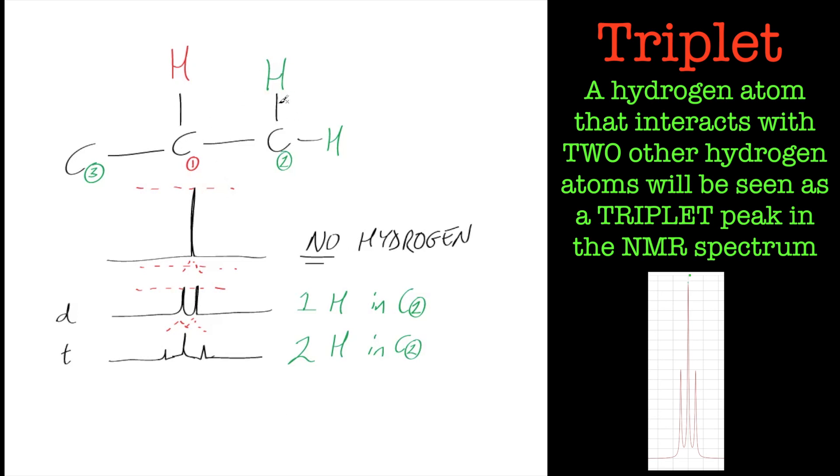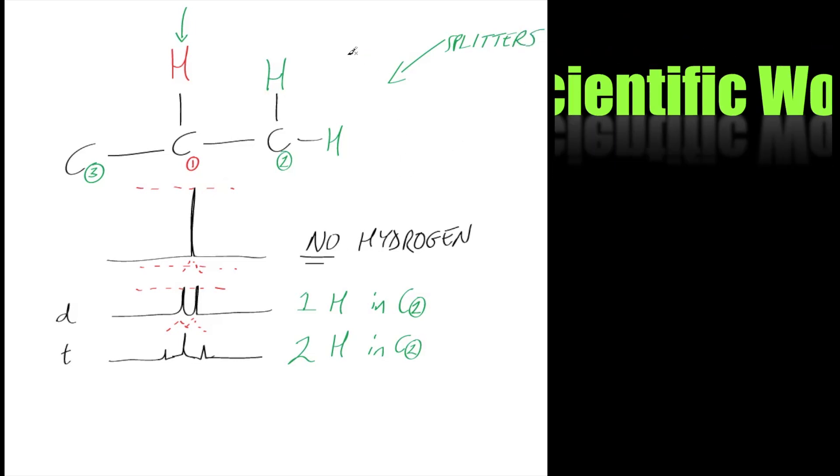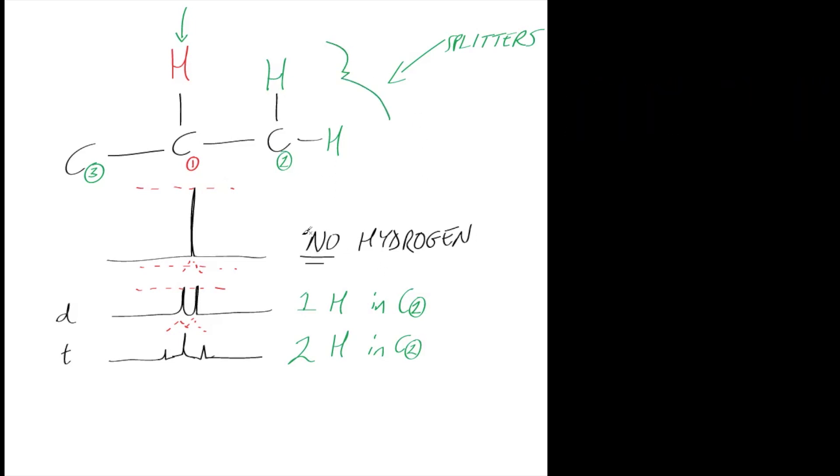And remember, it's the adjacent atoms that are interacting. I'm only interested, this signal here is coming from this hydrogen atom, not from these two, they all have their own signals. We're looking at this one, and it's been split by these. So these are the ones splitting, call them splitters. Now that is not a scientific word, I've just made that up. So don't think that NMR spectroscopists say splitters, they don't.